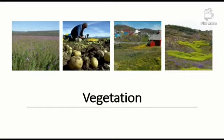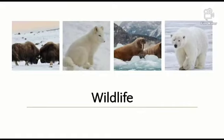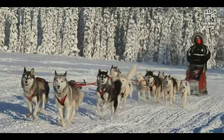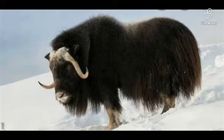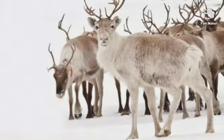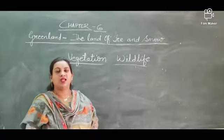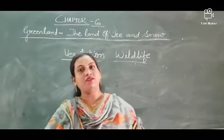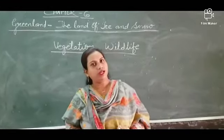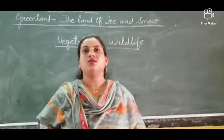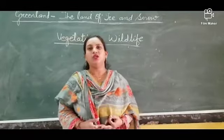Nowadays potatoes and other crops are also grown there. Animals that survive here are those who can bear the extreme cold weather. They include polar bear, musk ox, reindeer, arctic fox, wolf, and seal. The wolf-like dogs called huskies are also found here. Huskies are used for pulling the sledge. All these animals have a thick fur over their body to keep them safe.